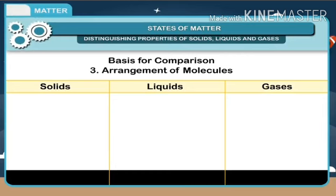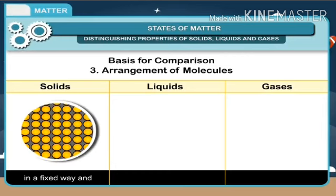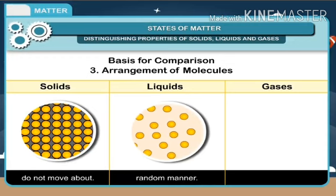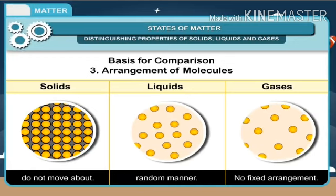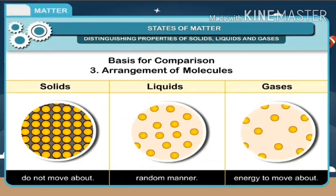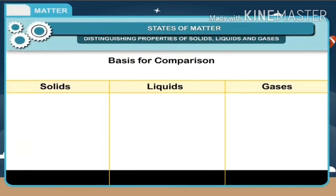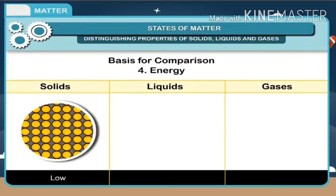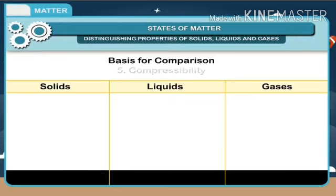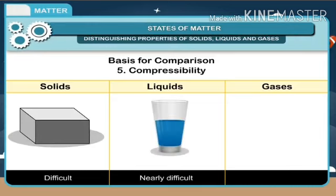Three — arrangement of molecules: in solids, particles are arranged in a fixed way and do not move around; in liquids, particles are not arranged in a fixed way but always move around in a random manner; in gases, there is no fixed arrangement and particles have a lot of energy to move around. Four — energy: low for solids, medium for liquids, high for gases. Five — compressibility: difficult for solids, nearly difficult for liquids, easy for gases.